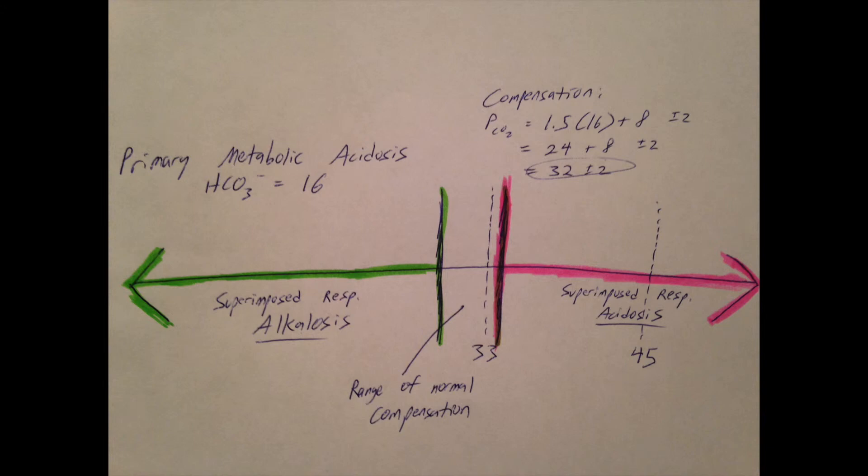Now, we said that any PCO2 between 30 and 34 is normal given the context of our underlying disorder. That means that greater than 34 is abnormal, and so is less than 30.